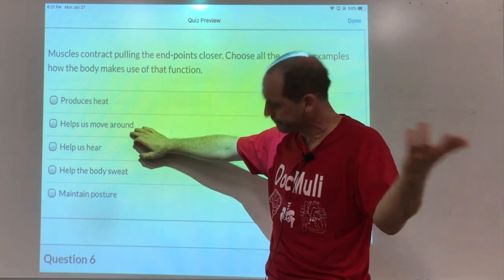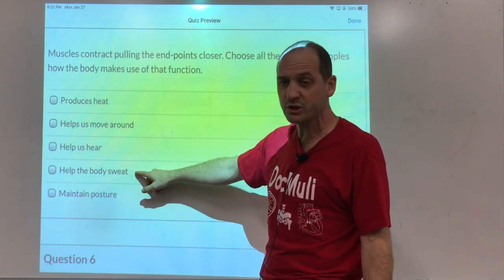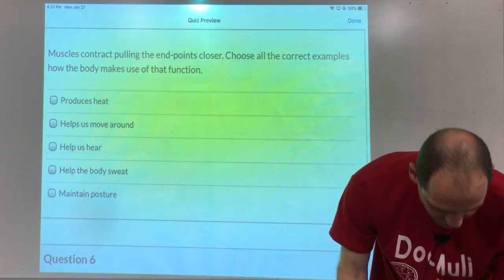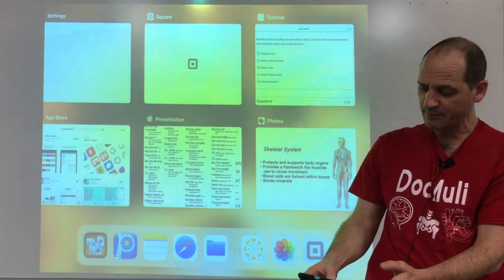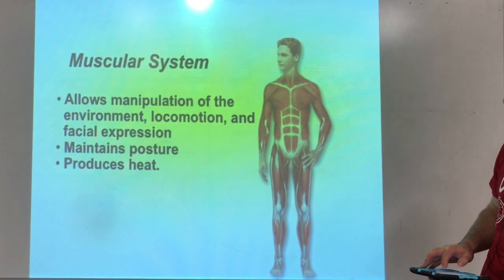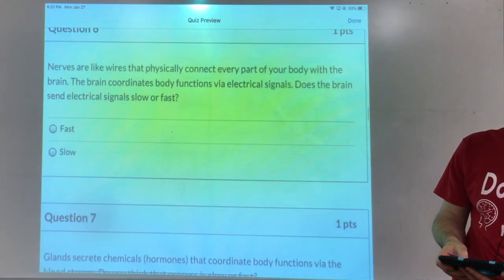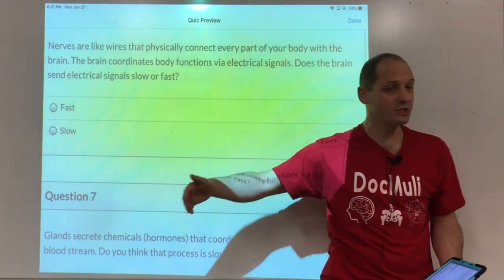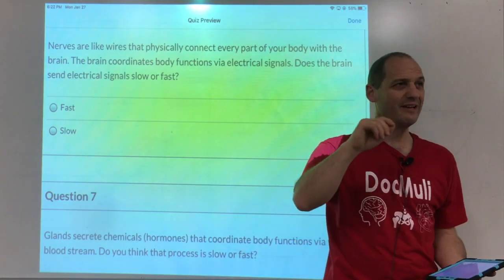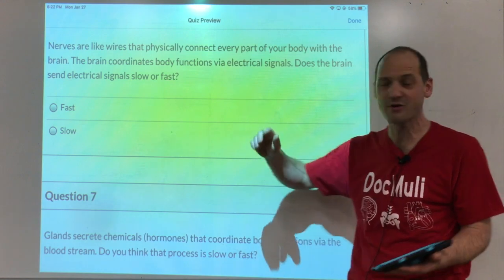Muscles help us move around and maintain posture — that's correct. They do not help the body sweat; we covered that in the integumentary system. So the skeletal system, with its descriptions, and then the muscles come next. Afterwards we get to nerves. The first few chapters involve multiple choice and true-false questions; later there are fill-in-the-blanks. If these are too easy, let me know and I can change them to fill-in-the-blanks earlier in the semester.